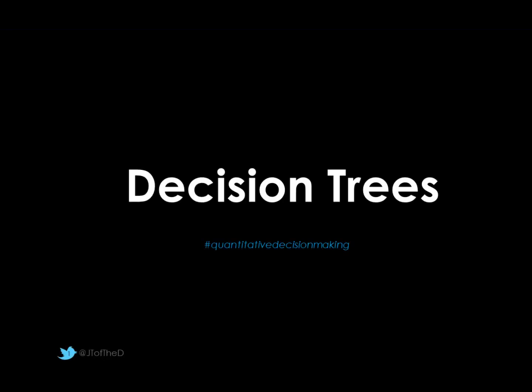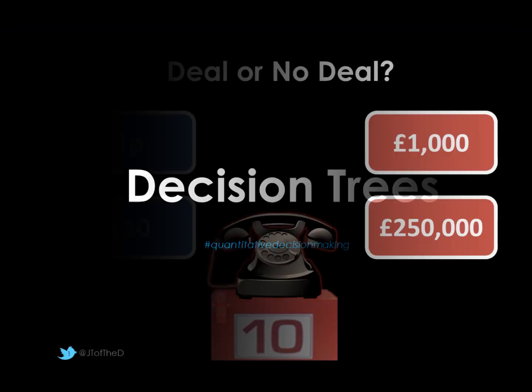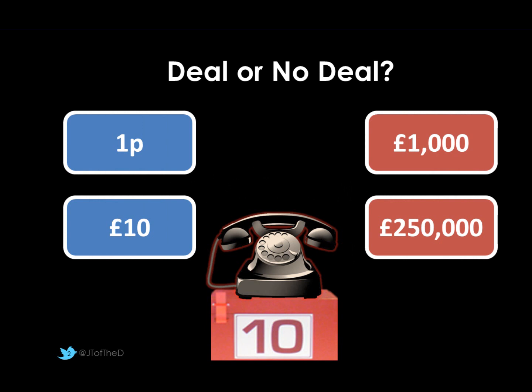This video tutorial will look at decision trees. Decision trees are actually something that we look at subconsciously on a daily basis, and one example of this is shown in the game show Deal or No Deal. In this game show, our contestant — in this case has got box number 10 — has options of boxes to pick from with varying amounts that could be inside.